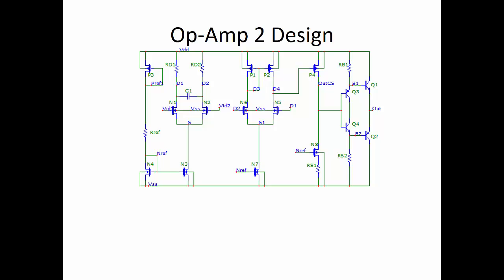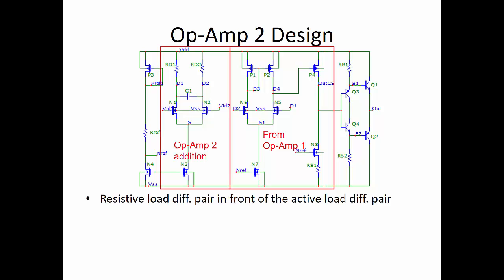The op-amp 2 design essentially adds a resistive load differential pair at the input, uses two differential pairs, and then a common source amplifier for gain. So that active load differential pair and common source amplifier are essentially from the op-amp 1 design. The resistive load differential amplifier helps with the offset voltage. By making one of those drain resistors a potentiometer, we can adjust and balance the differential pairs.